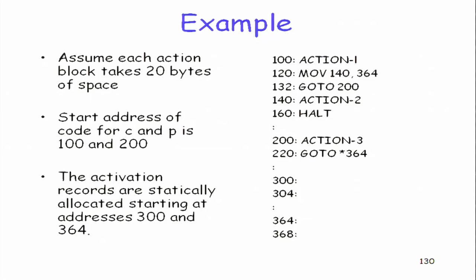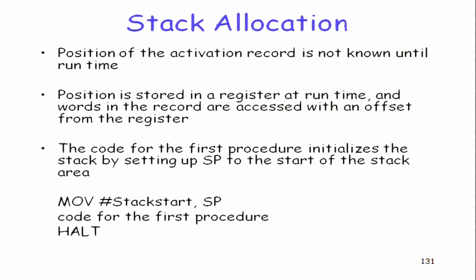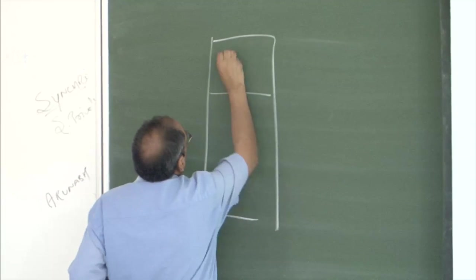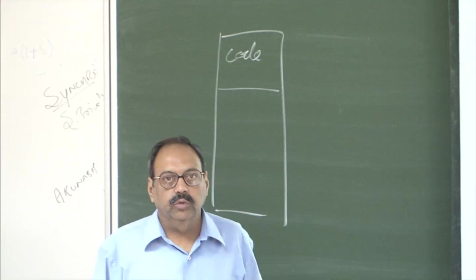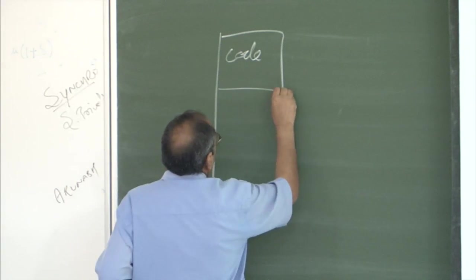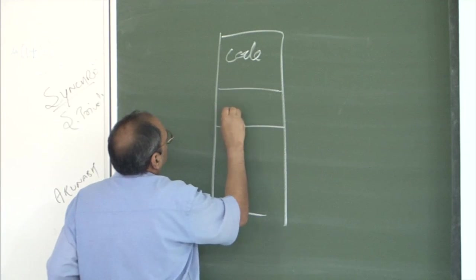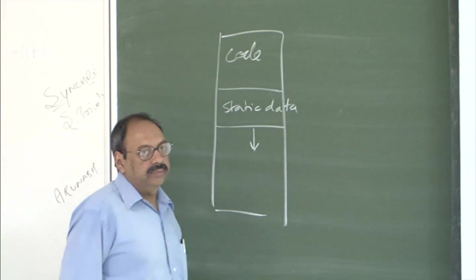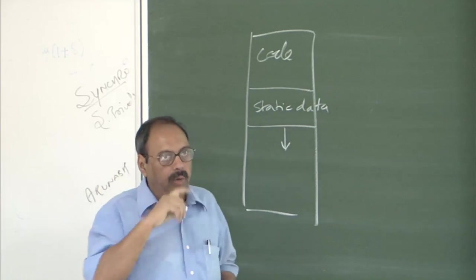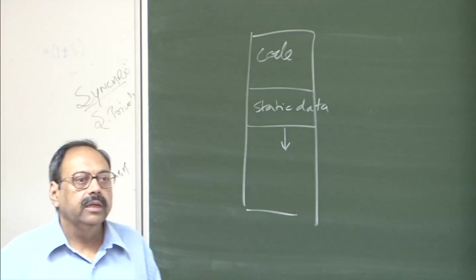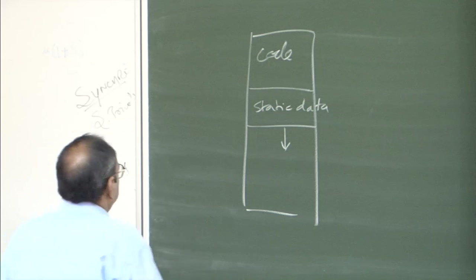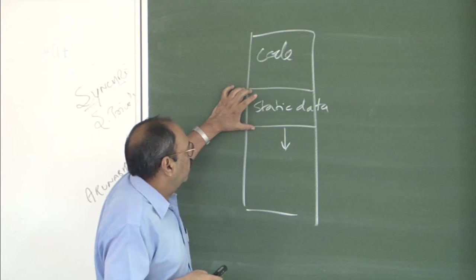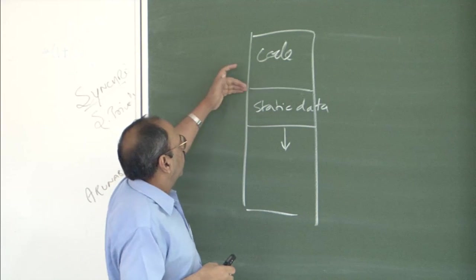Now let us come to stack allocation. In stack allocation, I have a code area for the main program and all functions and procedures, plus a stack that starts from some location, with static or global data below. The key thing to remember is the stack pointer. There are normally two pointers, but we work with one: the stack pointer, which initially points to the start of the stack area, with the activation on top of it.